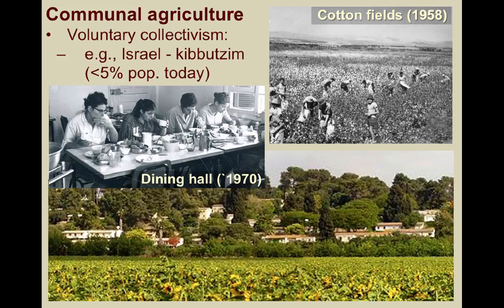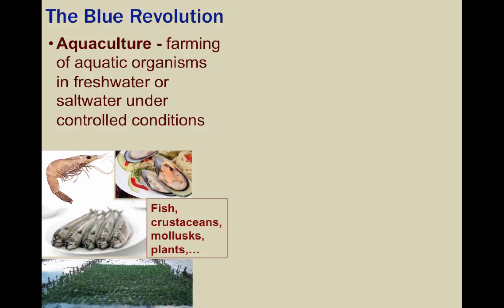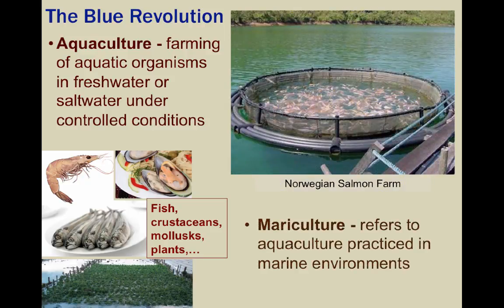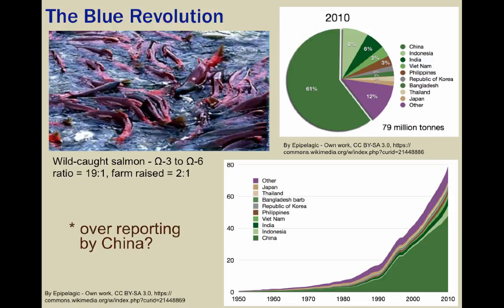The final trend we'll look at pertains to the Blue Revolution, which colloquially refers to the rise in aquaculture — the farming of aquatic organisms in freshwater or saltwater under controlled conditions. Certain types of fish, crustaceans, mollusks, and plants are farmed. Mariculture is a type of aquaculture in which the aquatic organisms are maintained in marine environments. Due to overfishing and the resulting strict fishing quotas, aquaculture has grown substantially over the decades and is becoming a viable option for feeding a growing planet of almost 7.5 billion people. One thing to keep in mind is that farmed fish are usually not as nutritious as the wild-caught variety — for instance, wild salmon are very rich in healthy fish oil compared to their farmed relatives.